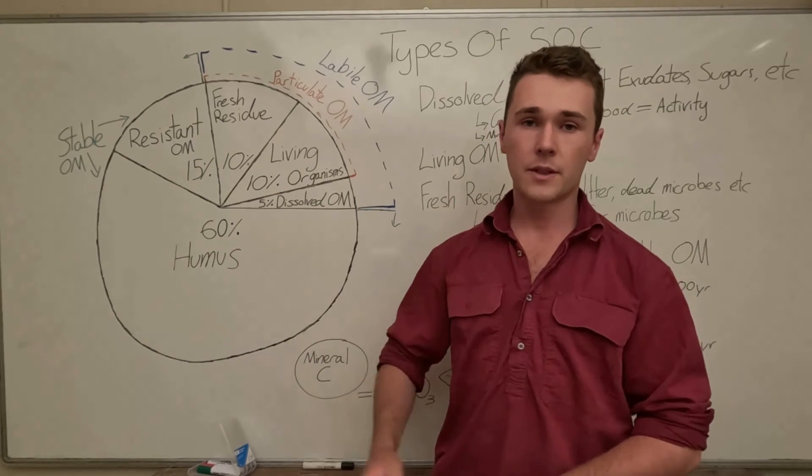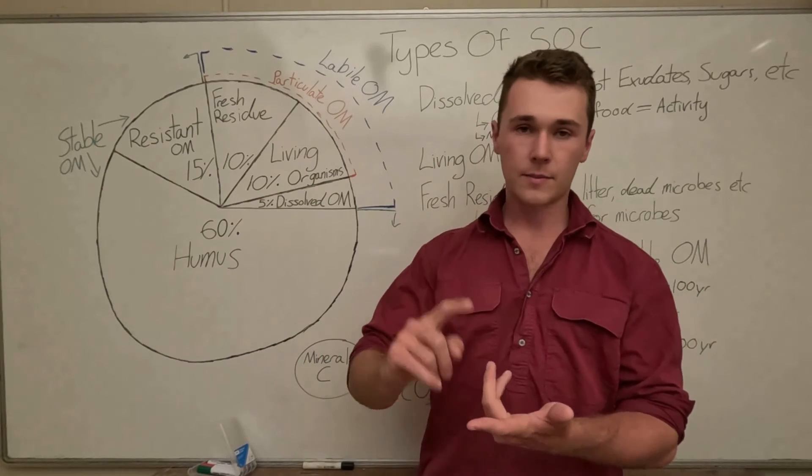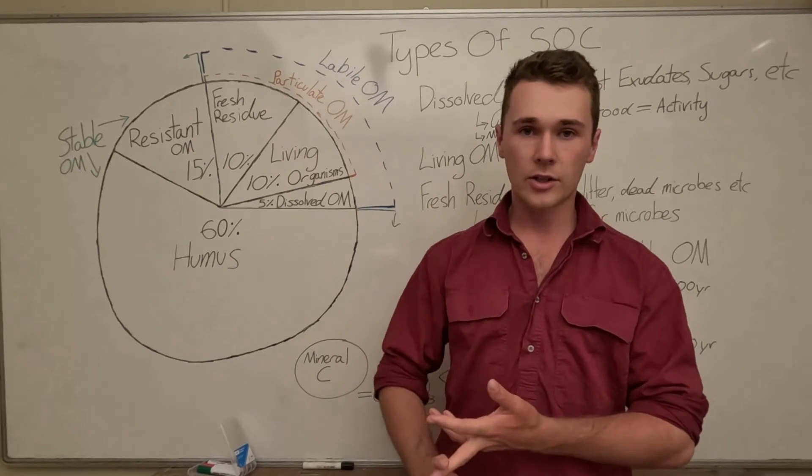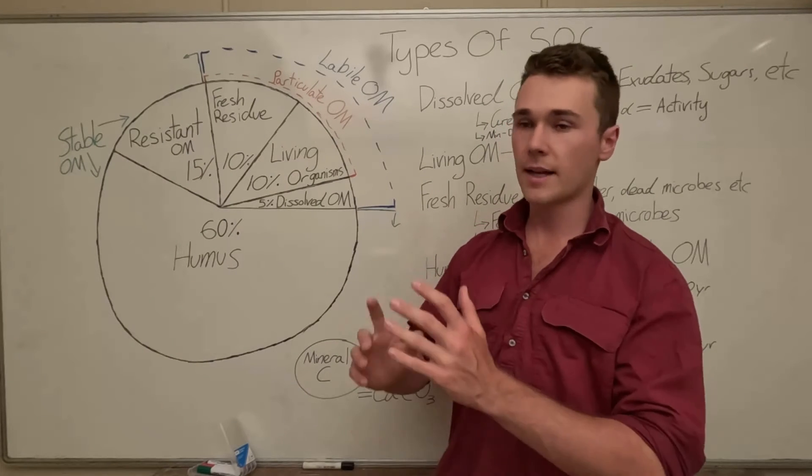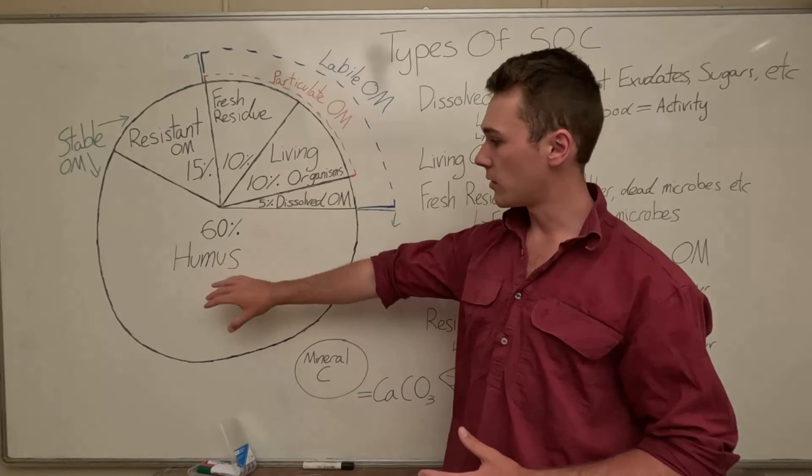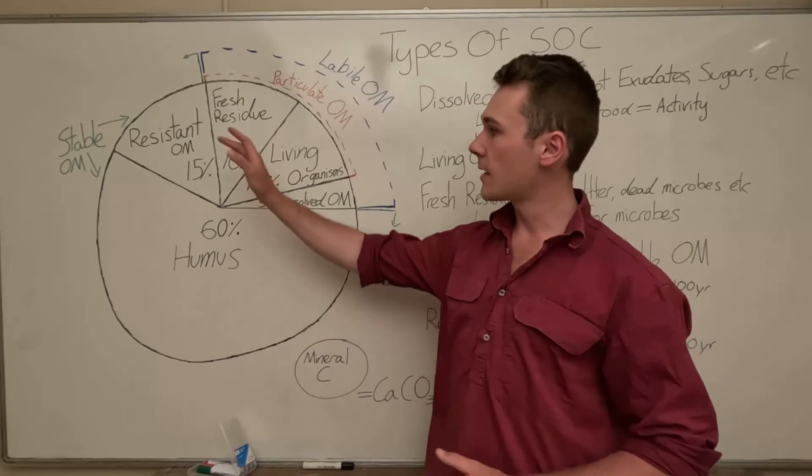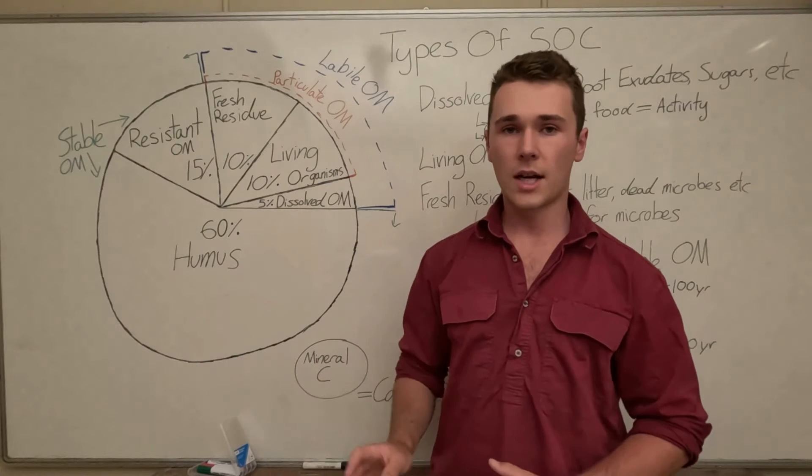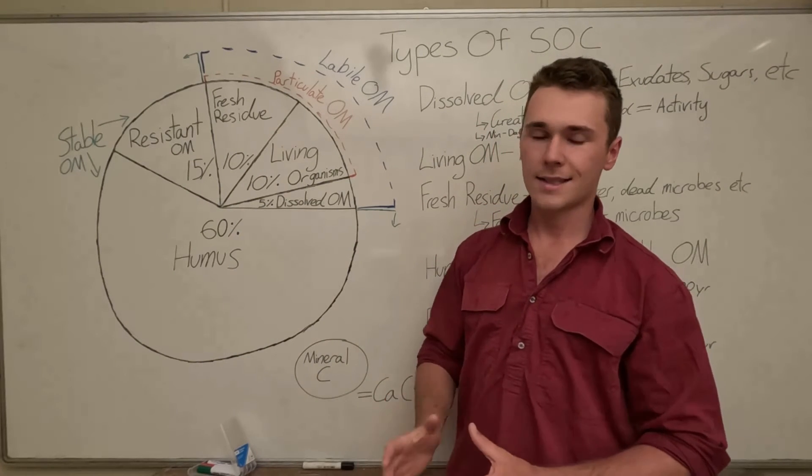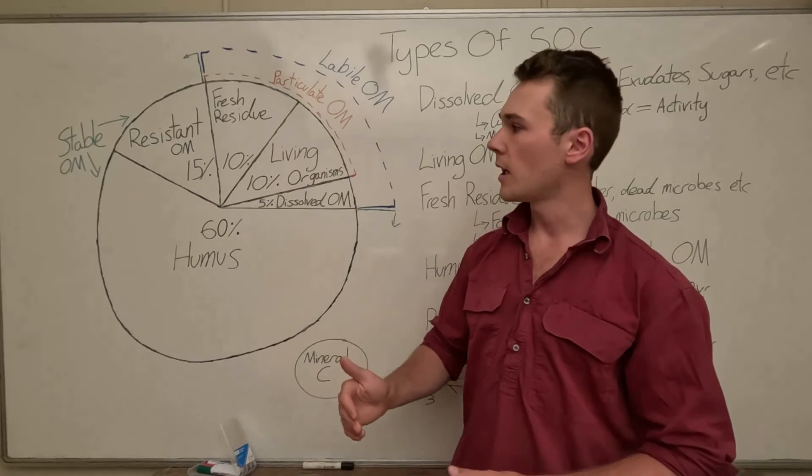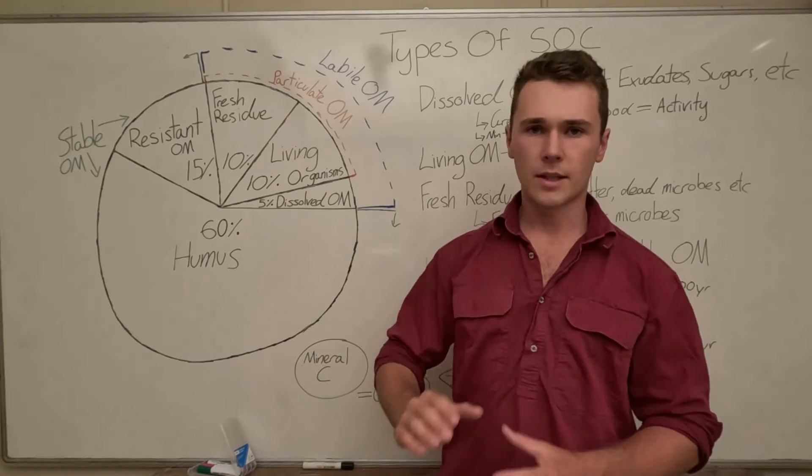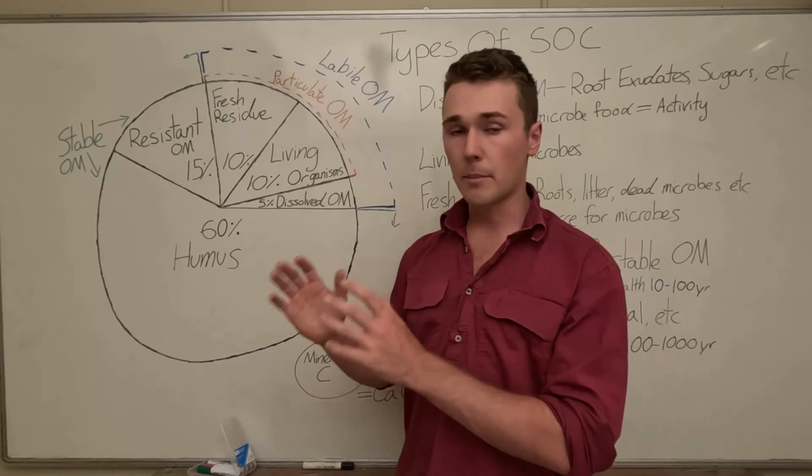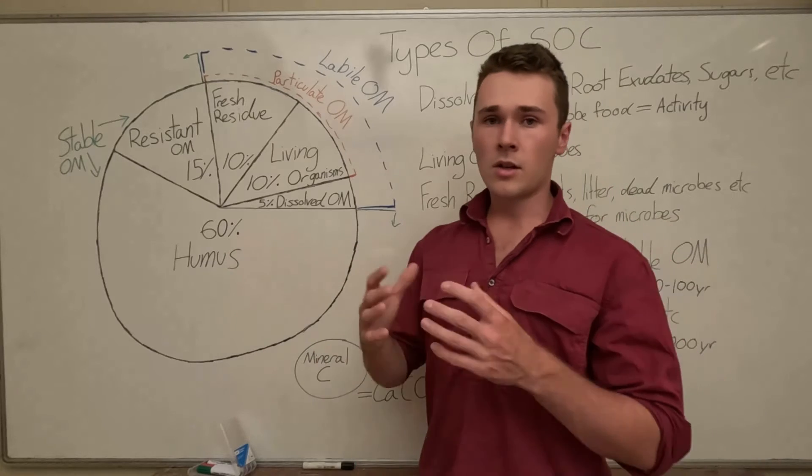Now it still does have benefits so it does have a pretty high CEC and anion exchange capacity it has water holding capacity but it's not as effective as humus and it's hard to build resistant organic matter especially when you're trying to apply biochar. I think I did a calculation and it takes like 60 massive trees to build one percent soil organic carbon if you're applying biochar.